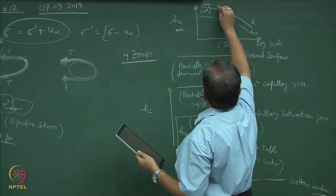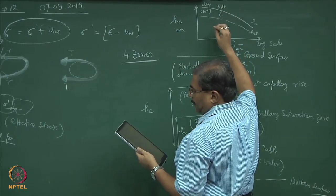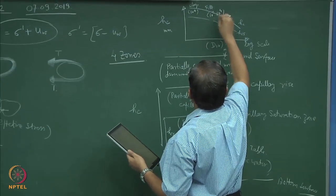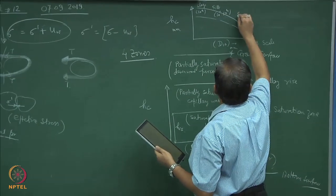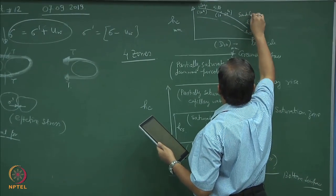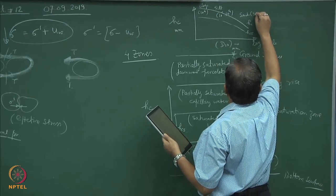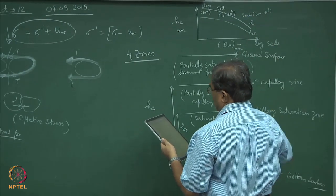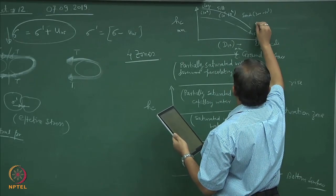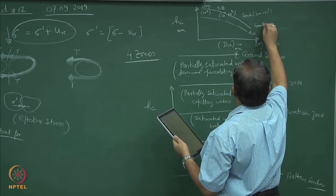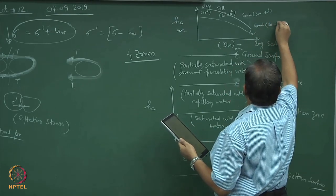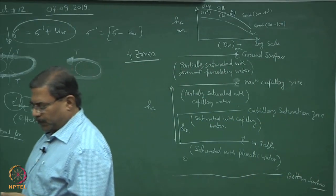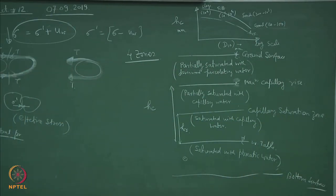For silts, hc is 10³ to 10⁴ mm. For sands, 300 to 10³ mm. For gravels, 20 to 100 mm. Gravels are not supposed to show much capillary action — this is just to give you an idea.